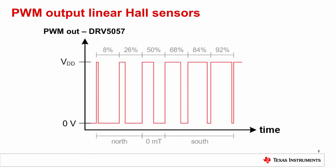Linear Hall Sensors that have a PWM output, such as the DRV5057, output a 2 kHz clock with variable duty cycle. When there is no magnetic flux present, the duty cycle is 50%. The duty cycle increases or decreases proportionally with the strength of magnetic flux density applied.